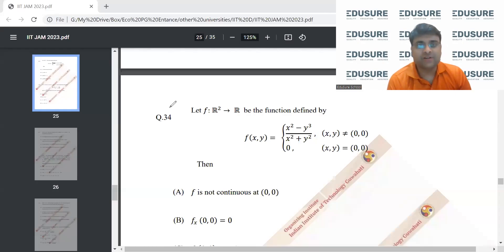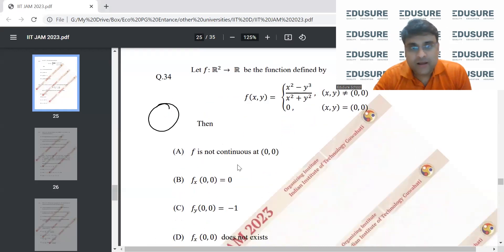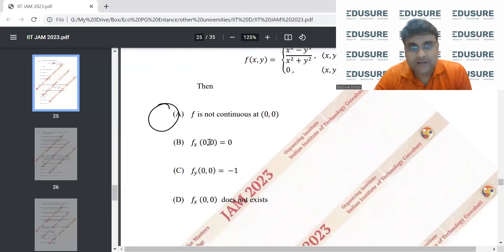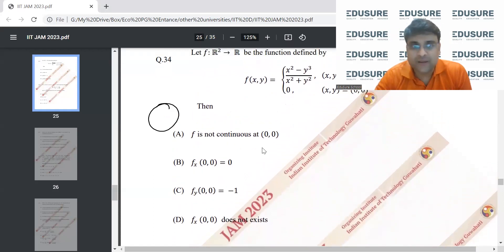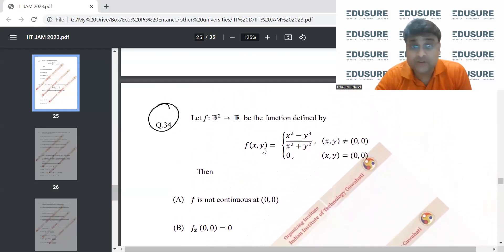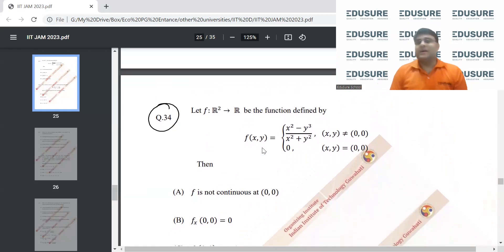IIT JAM 2023 question number 34. f is the function defined by this formula, so we need to talk about firstly the continuity at (0,0) and then we want to find out the partial derivative at (0,0) with respect to x and with respect to y.